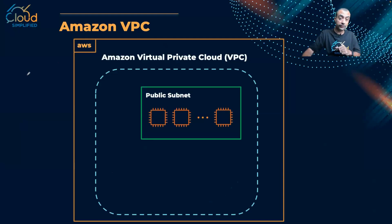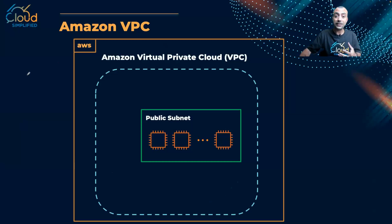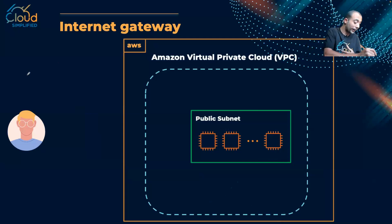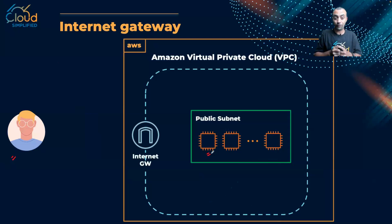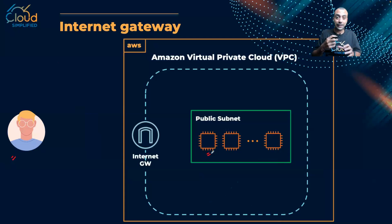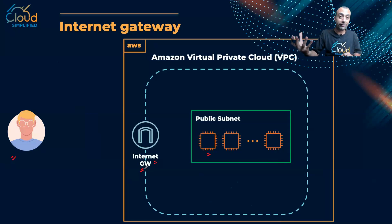Now let's zoom in inside the public subnet to understand how it gets access to the internet. The question is: how can resources inside my public subnet access the internet, or how can clients access resources inside this public subnet? Here comes the concept of an internet gateway. To understand the internet gateway, think about how you have internet inside your home — you have a DSL gateway or DSL router, and that is what connects your home to the internet. That's exactly the same concept here.